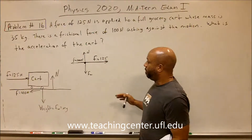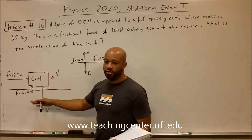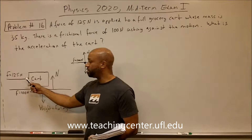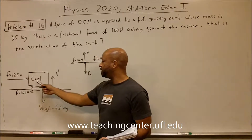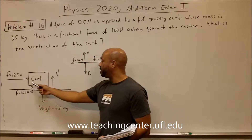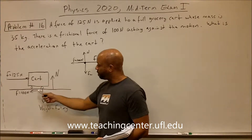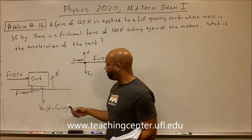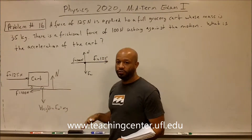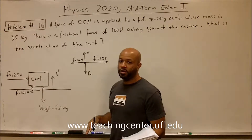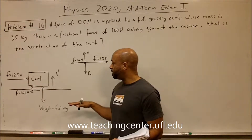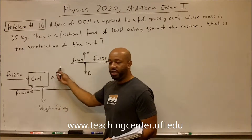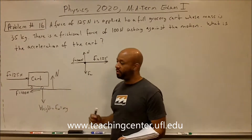Here is the illustration of the problem statement. We have a cart and there is a force applied to it. The cart will have a tendency to move in that direction when the force is applied, but there is a frictional force acting against it. Since the cart is on a surface, we have the weight of the object acting down, and an equal and opposite force called the normal force acting up on the object.